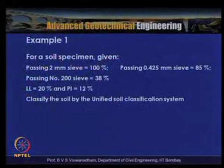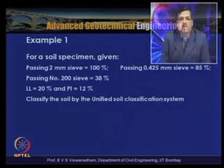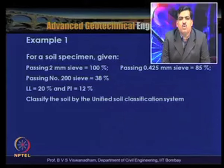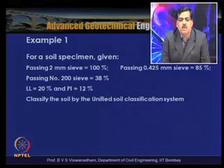Let us take Example 1. We are given: percentage passing 2 mm sieve is 100%, passing 0.425 mm sieve is 85%, passing the No. 200 sieve (75 micron) is 38%, liquid limit is 20%, and plasticity index is 12%. We need to classify the soil using the Unified Soil Classification System.